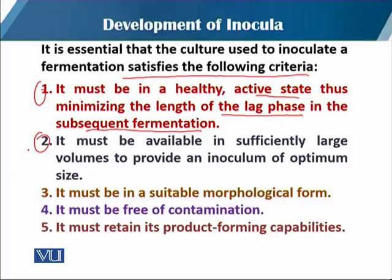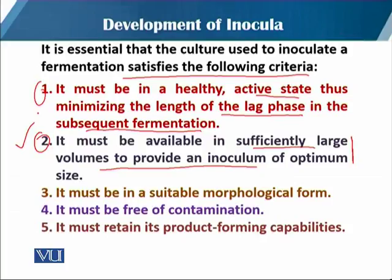The second criterion is that the inoculum must be available in a sufficiently large volume to provide an inoculum of optimum size. As an analogy from normal life, if we have only one seed and we are going to cultivate a one-acre land, one seed is insufficient. So before cultivating a one-acre land we need a proper size of seed. We must have a sufficient and large volume according to the capacity and volume of the fermenter.